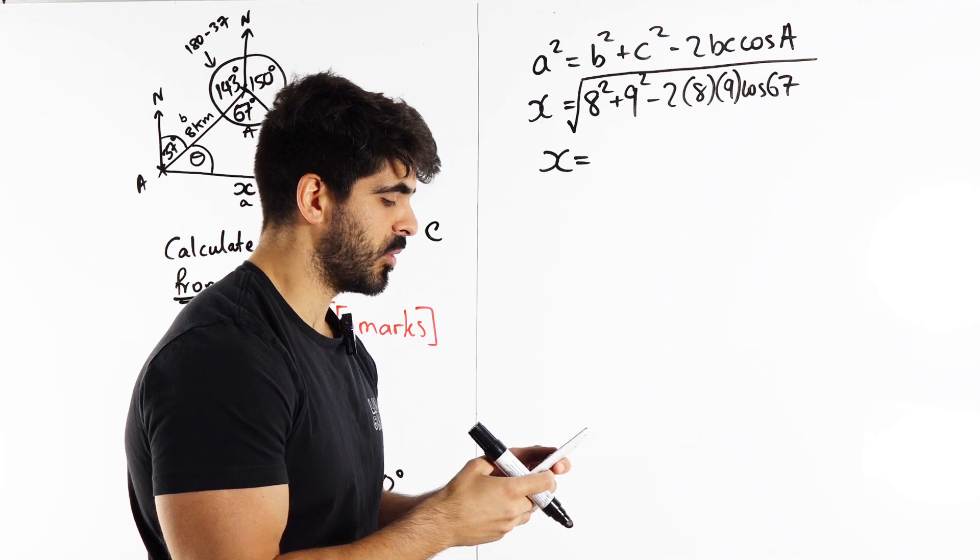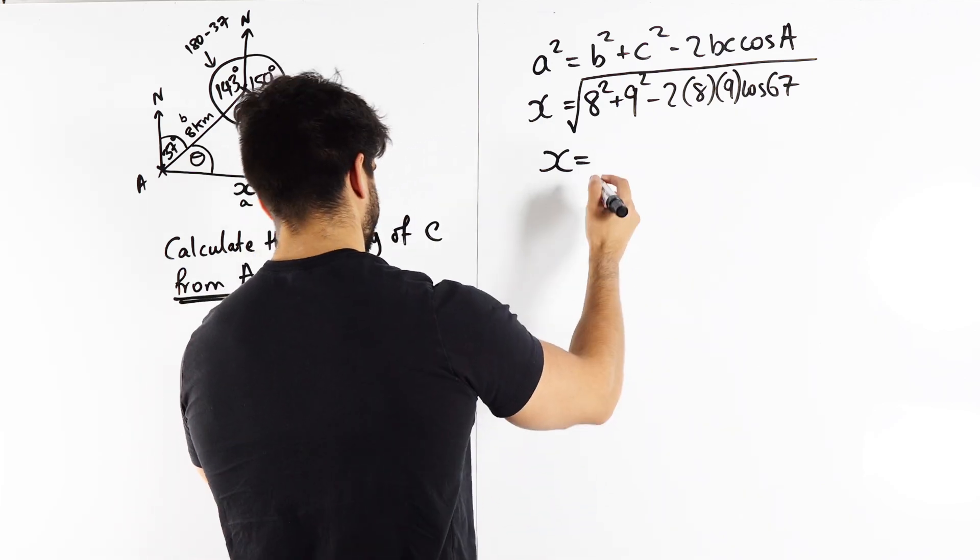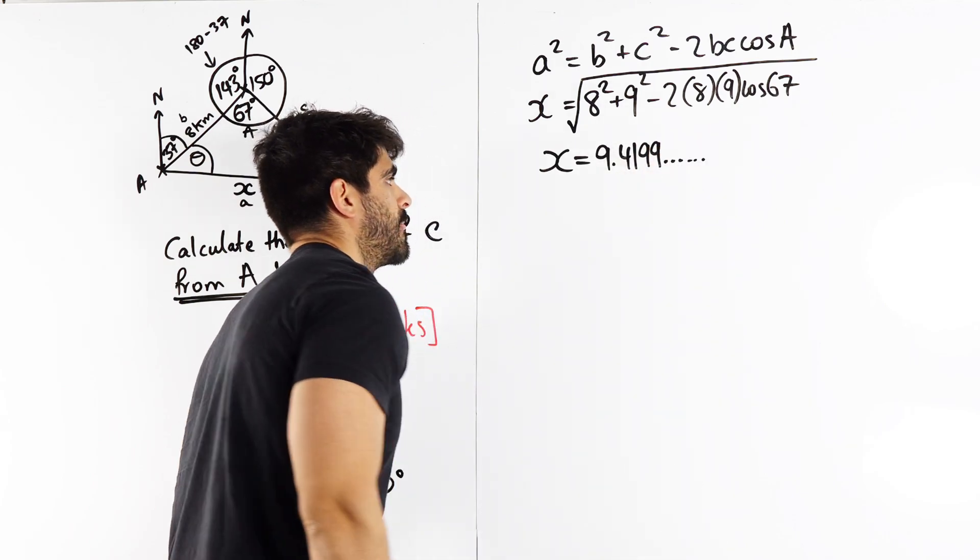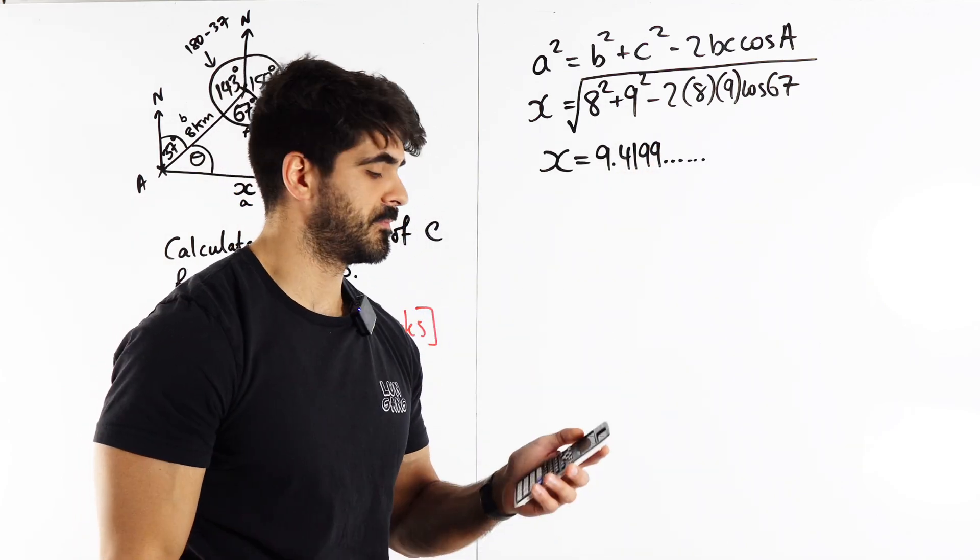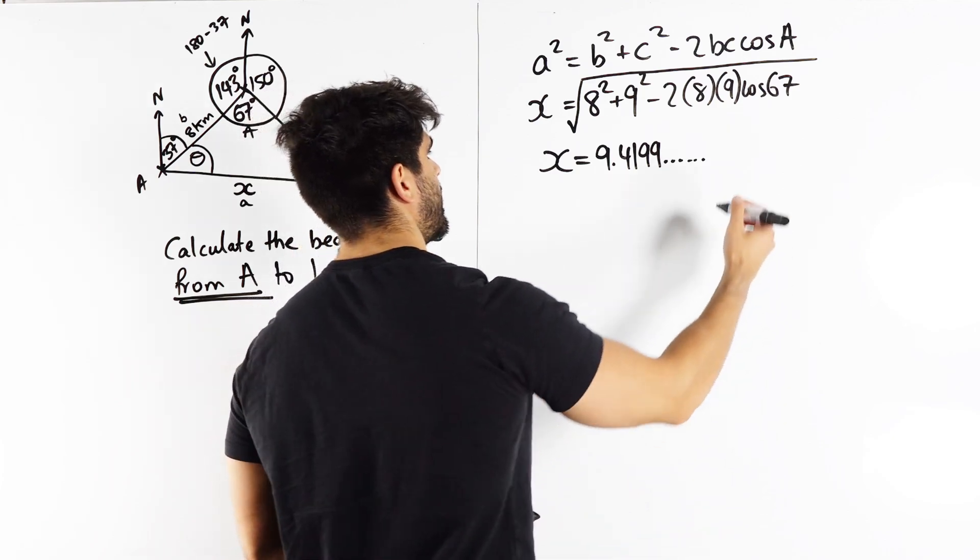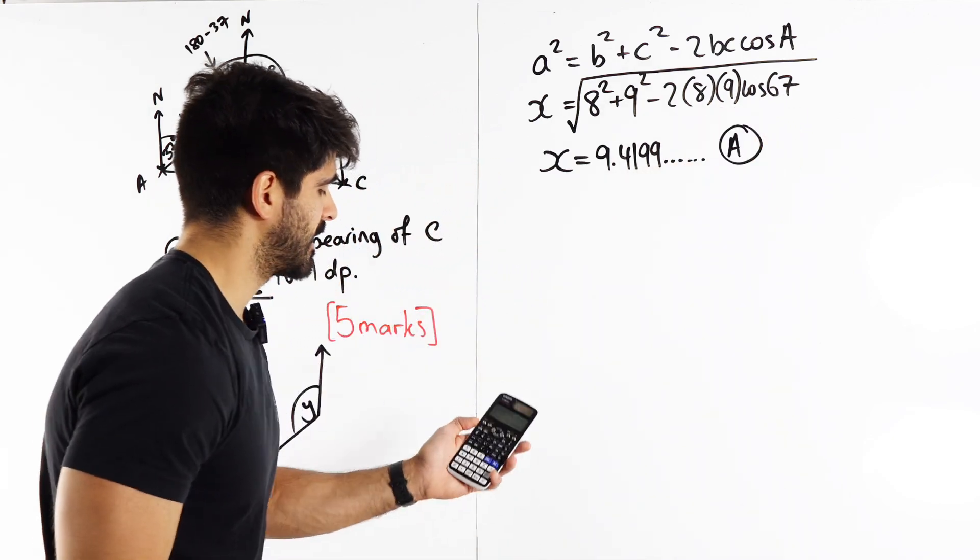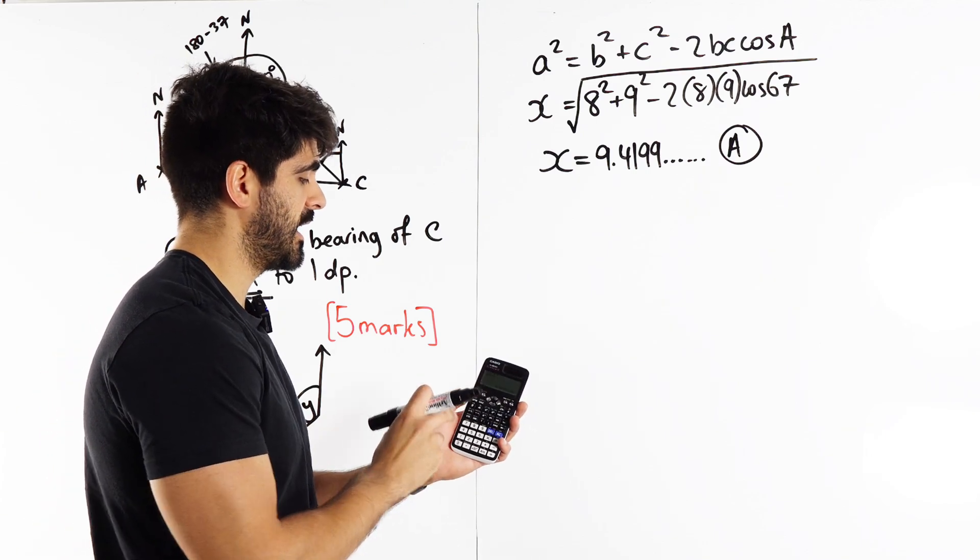9.4199. Okay? Now, what I'm going to do is I'm going to store this value. I'm going to store it as the letter A. So that, so in my calculator, I'm just going to, above the 7, I have STO A.